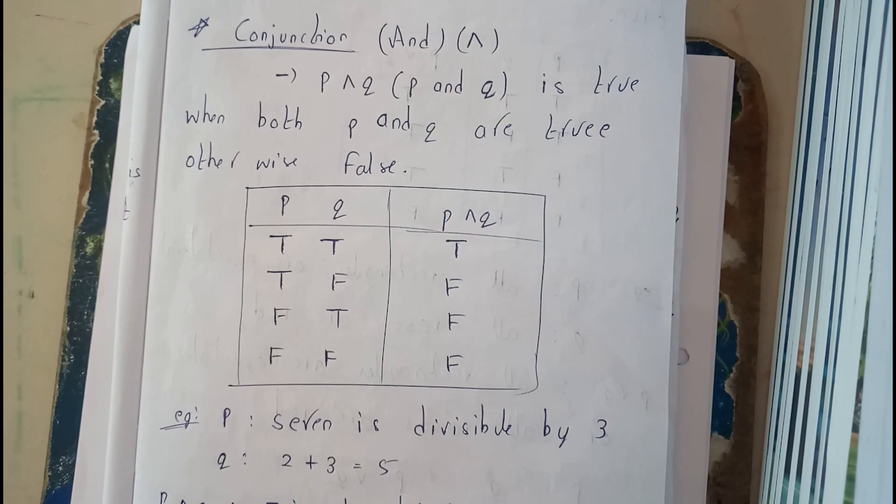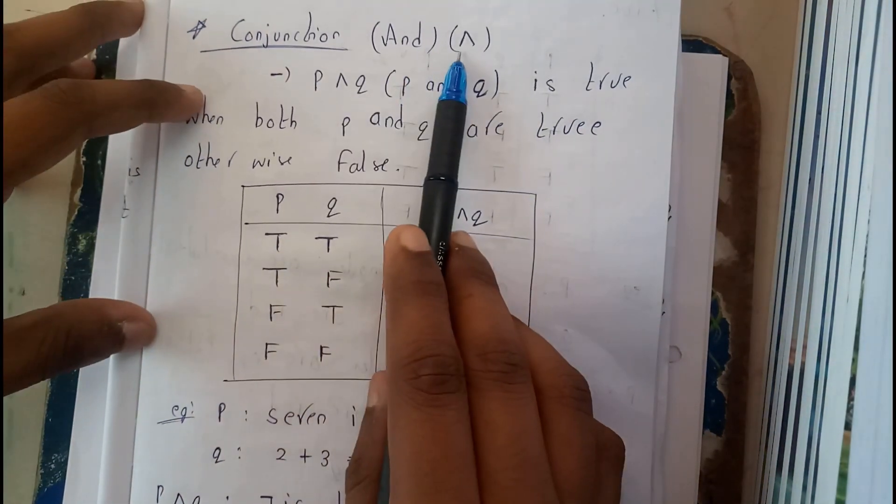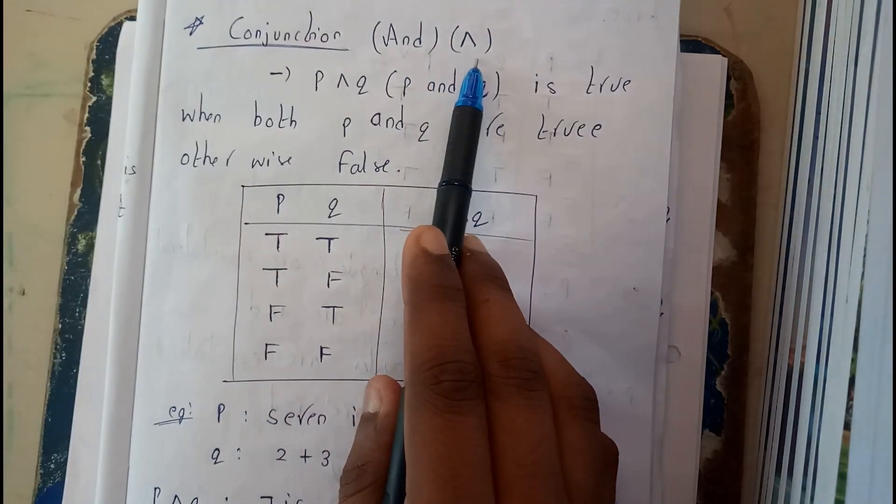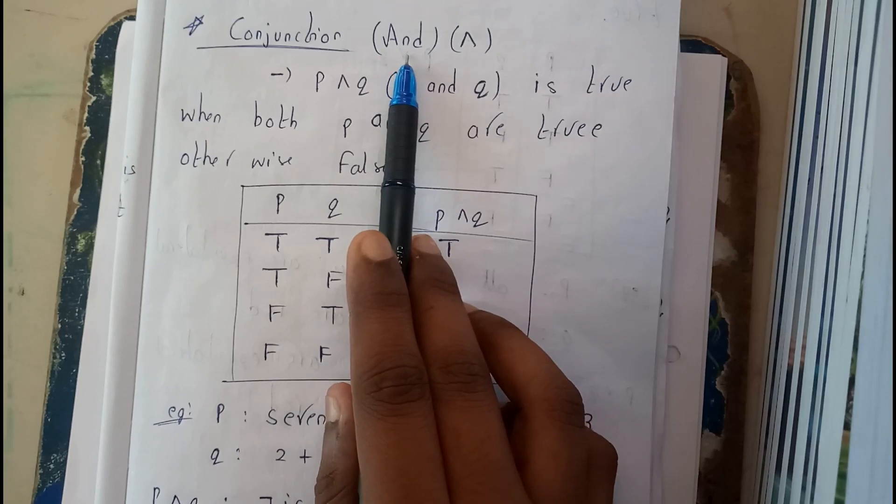Hello guys, in this tutorial let's see what is conjugation. Conjugation is a common word which indicates the symbol like this, an upside down V, and it is denoted as 'and'.